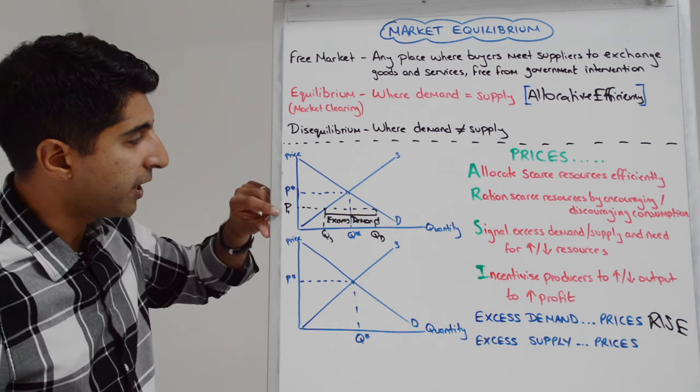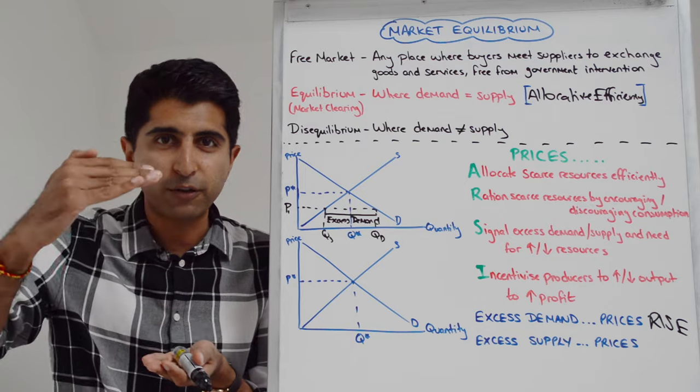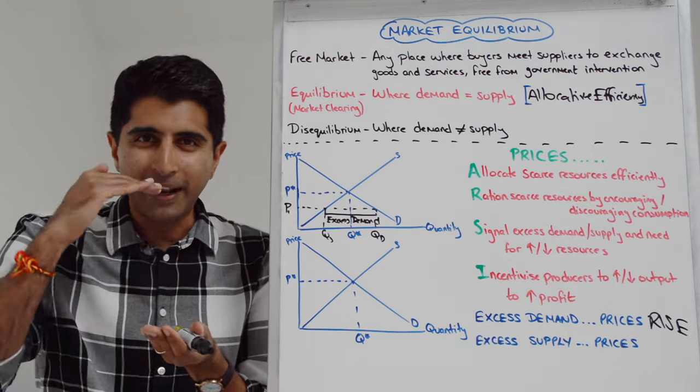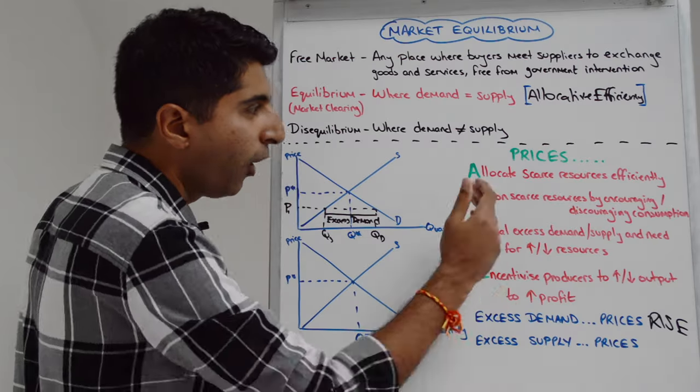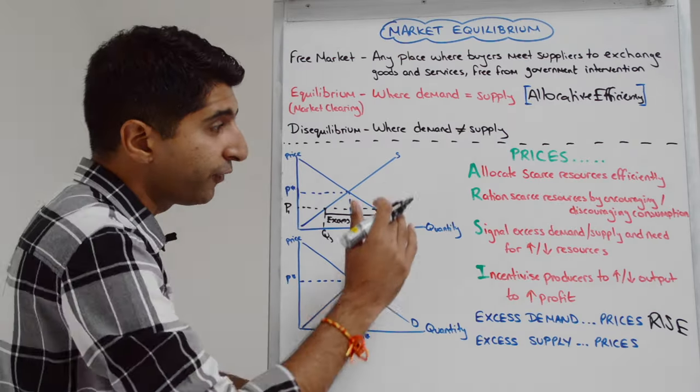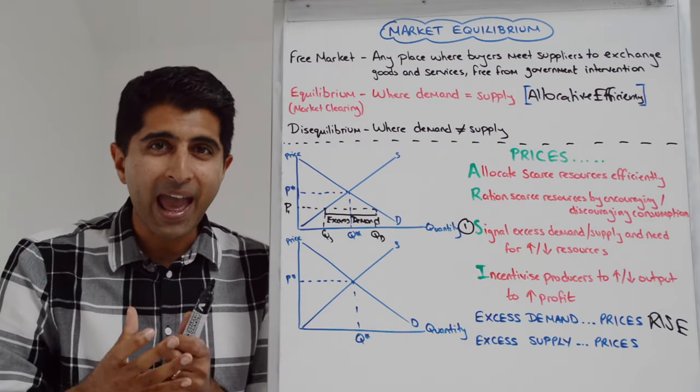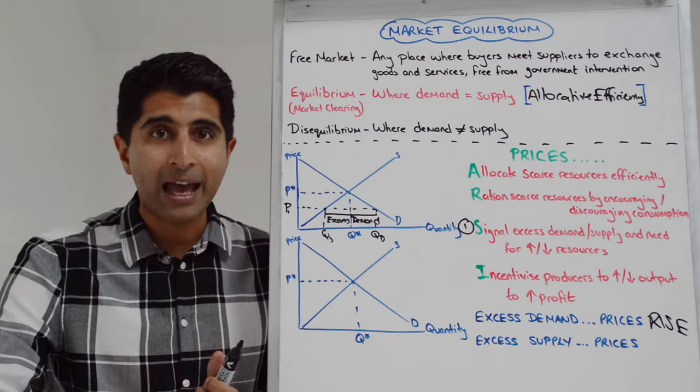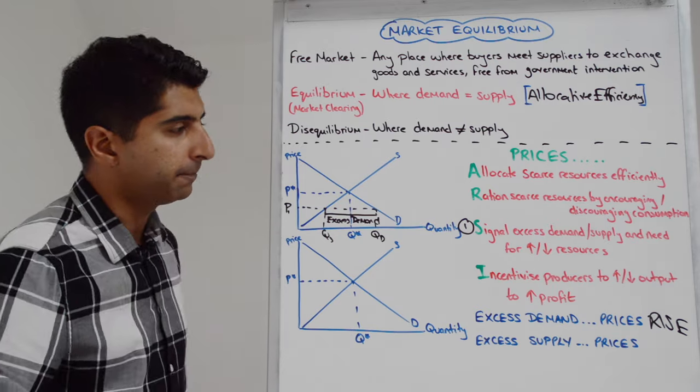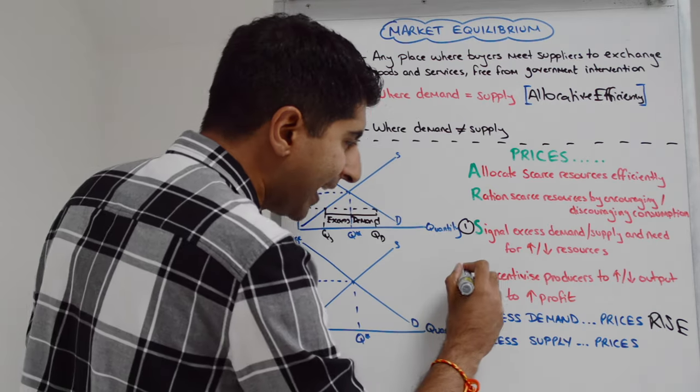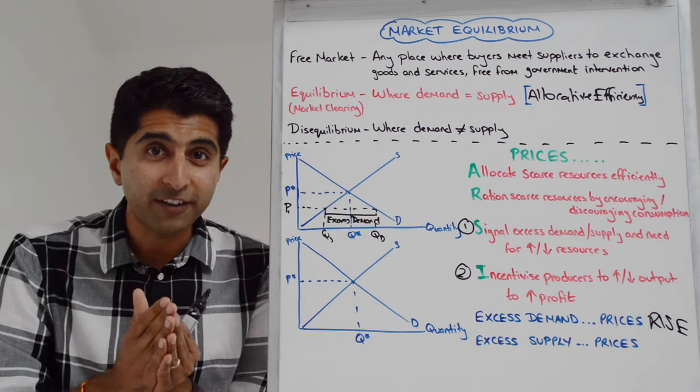Let's assume in this situation they rise perfectly from P1 to P star. In reality, it will be numerous price rises before we get to P star. But let's keep things simple. In one go, from P1 to P star, then BAM, all these functions kick in. First of all, higher prices signal the fact that there has been excess demand to both consumers and producers, but also higher prices signal the need for more resources in this market. Higher prices incentivize firms to increase their output in order to make more profit.